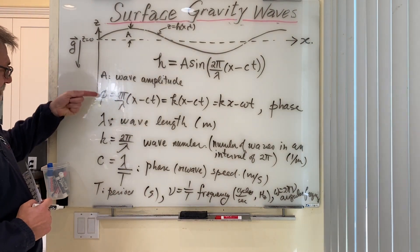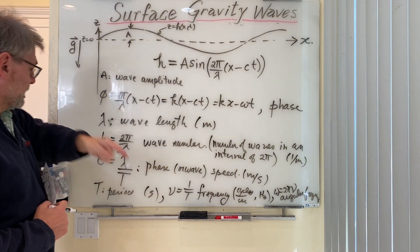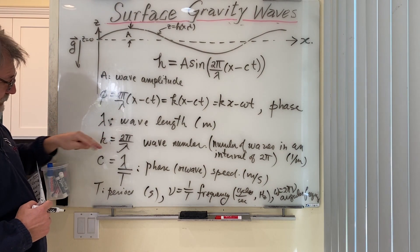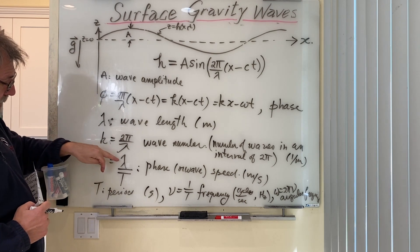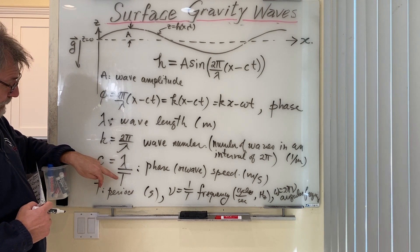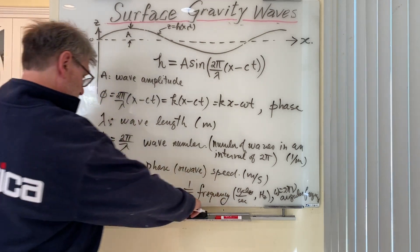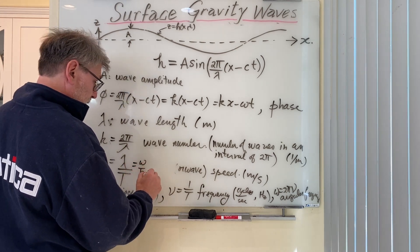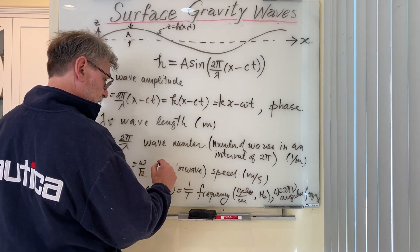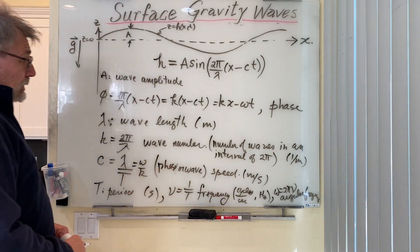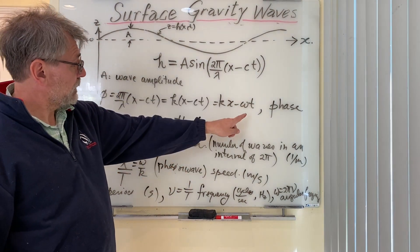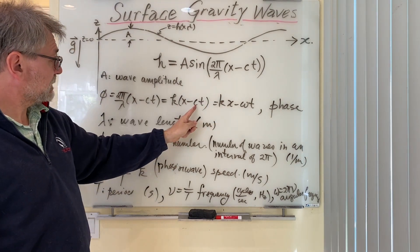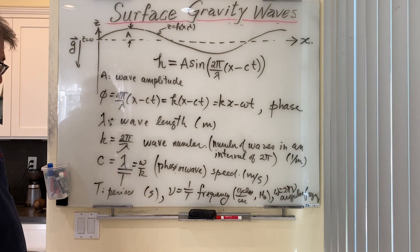To recap: amplitude, phase (the argument of the sine), λ the wavelength, k the wavenumber — these are reciprocals up to a factor of 2π. c is the phase speed, equal to λ over T, and it can also be written as ω over k. If I pull out k from the phase expression, c equals ω over k, which is the wave speed.